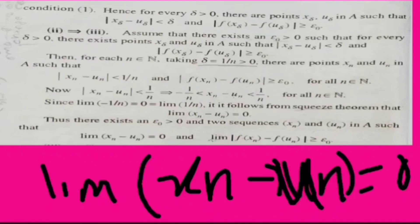That's the limit of minus 1 by n. This is the limit of xn, un. If you have xn, un, you can see this. This is the limit of xn, un — the limit is 0. This is the limit of 1 by n. This is the center of xn, un. This follows the squeeze theorem.